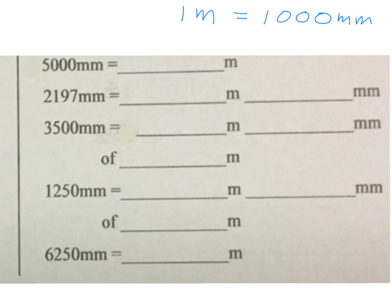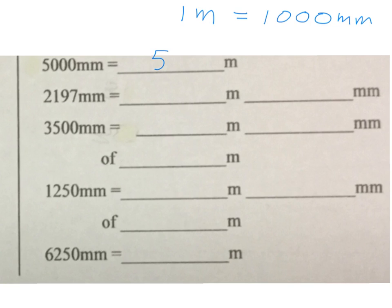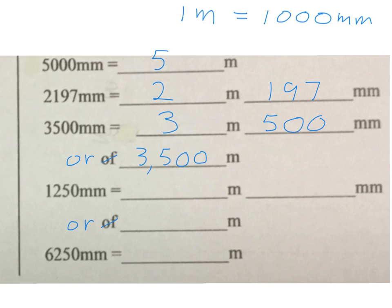The last group: converting millimeters to meters. For 5000 millimeters: the meter is the big one, the millimeter is the small one. Do I have enough small ones? Yes — I need 1000 millimeters per meter, and I have five thousands, so the answer is 5 meters. For 2000 millimeters: do I have enough? Yes — there is one 1000 over there, so I can make 2 meters. Get the feeling: every 1000 millimeters makes one meter and what's left over is the remaining millimeters. For 3500 millimeters: there are three thousands, so 3 meters and 500 millimeters left over.